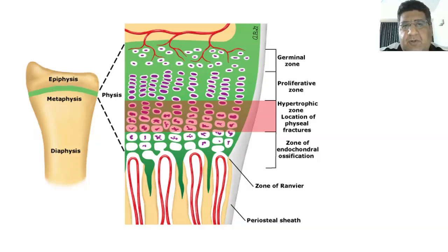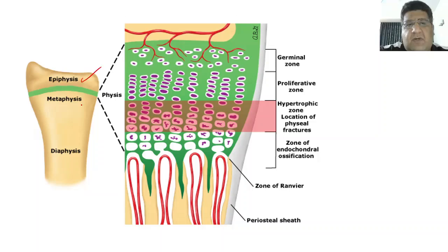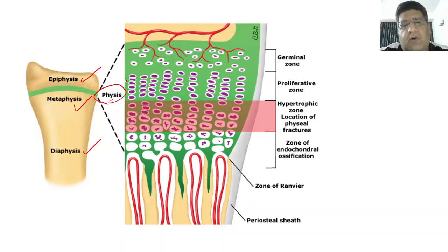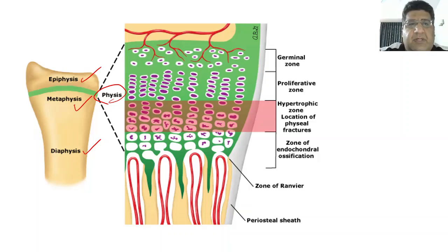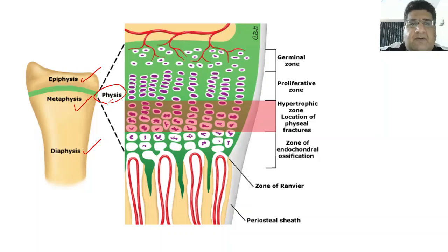Let's discuss the anatomy of the physis. You can appreciate what is an epiphysis, a diaphysis, a metaphysis — and then you have this layer called the physis. It is a slab essentially made up of hyaline cartilage lying between the epiphysis and the metaphysis. So it is precisely a layer of cartilage which later on ossifies into bone.